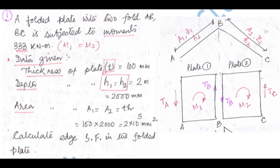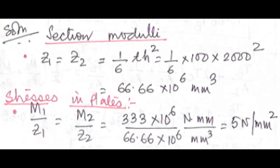First, find the section modulus. Z1 = Z2 = (1/6)TH² = (1/6)(100)(2000)² = 66.66 × 10⁶ mm³. Next, find stresses in the plate: M1/Z1 = M2/Z2. Converting 333 kN·m to N·mm (multiply by 10⁶) and dividing by 66.66 × 10⁶ gives M1/Z1 = 5 N/mm².